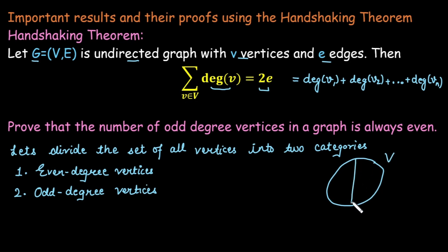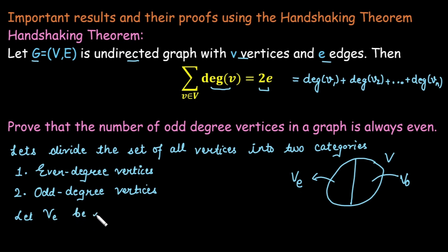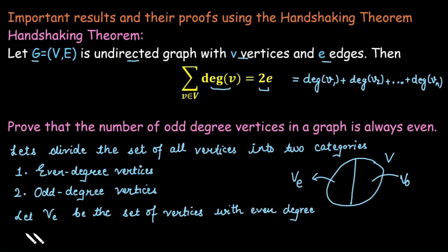We have the vertex set divided into two parts: one set of even-degree vertices and another set of odd-degree vertices. Let V_E be the set of vertices with even degree, and V_O be the set of vertices with odd degree.